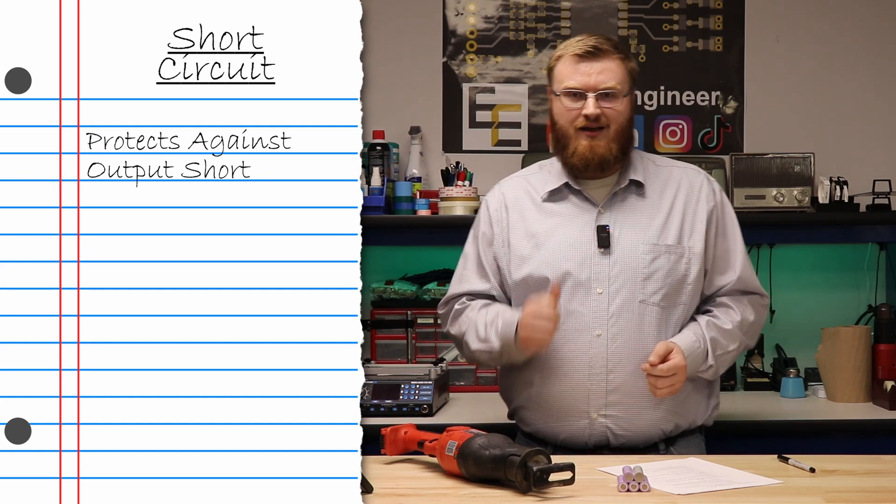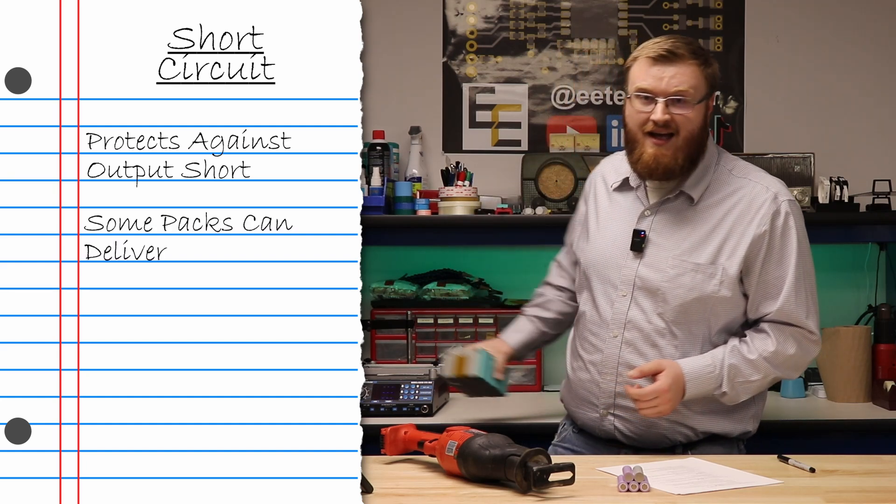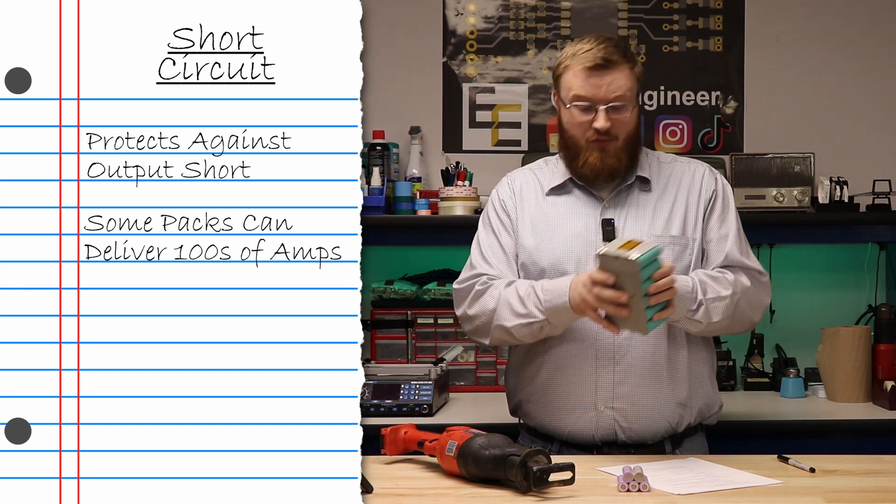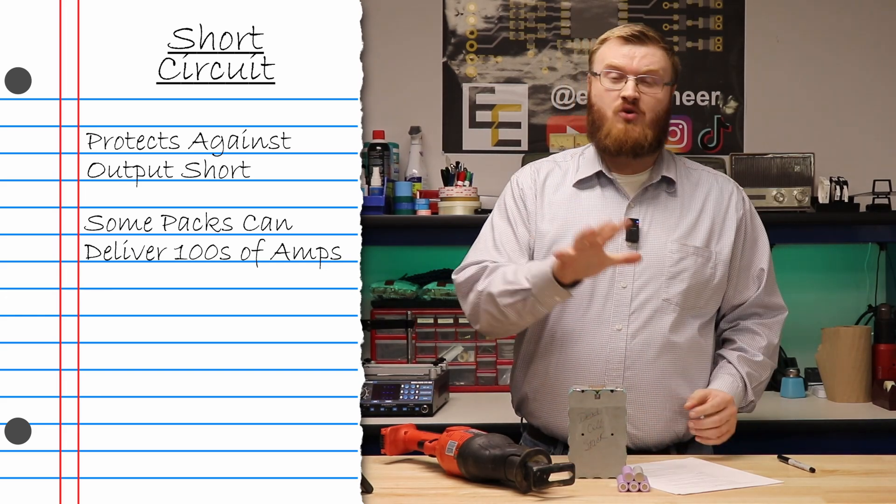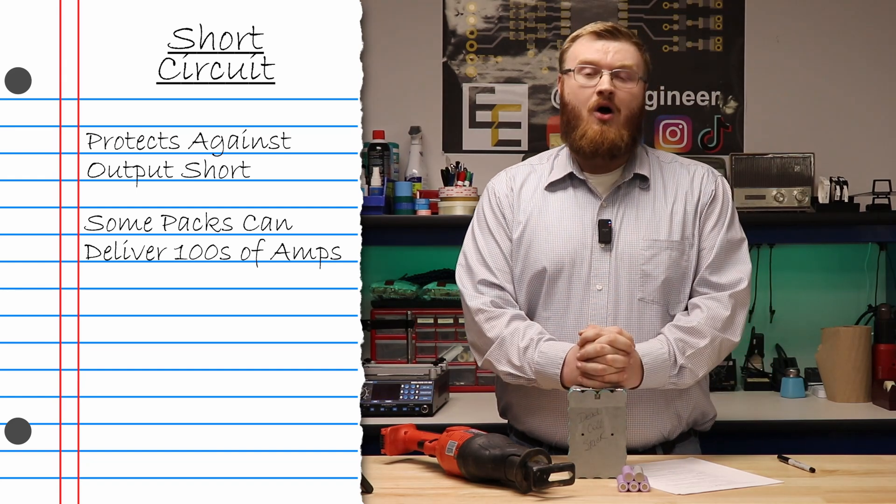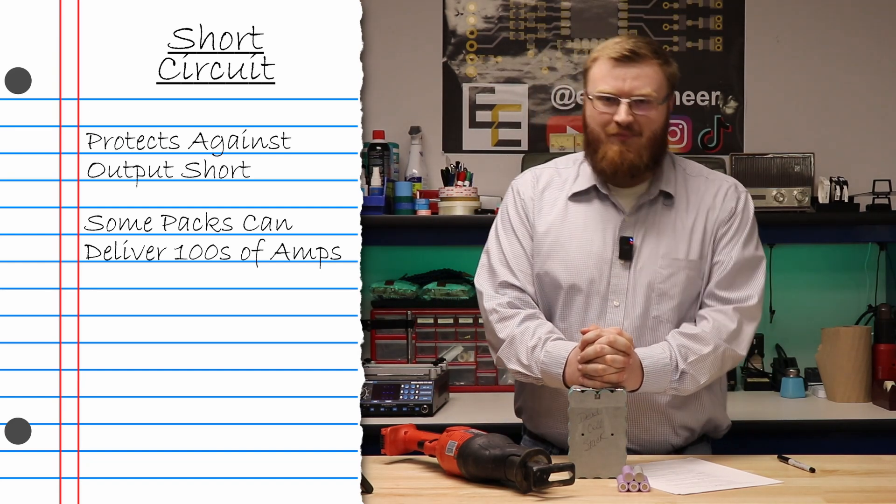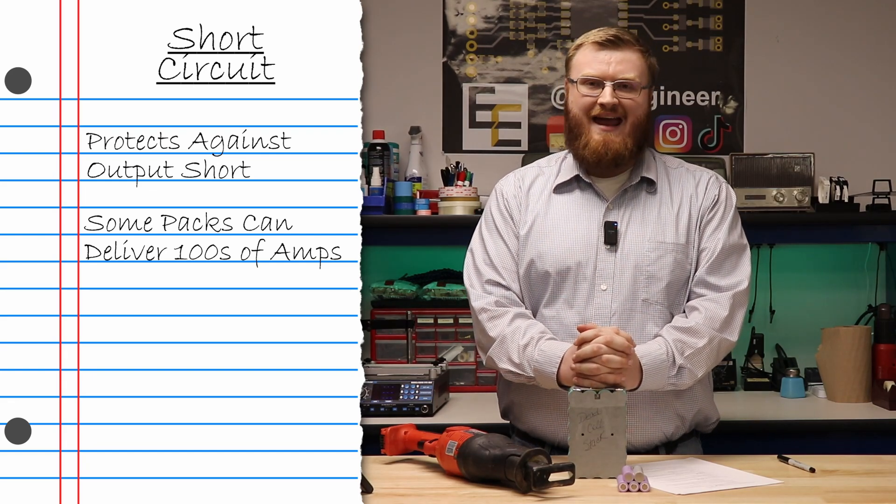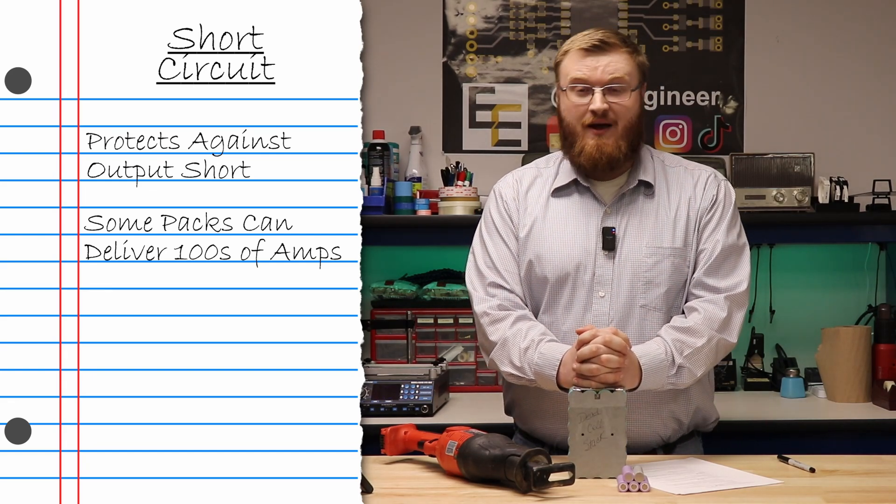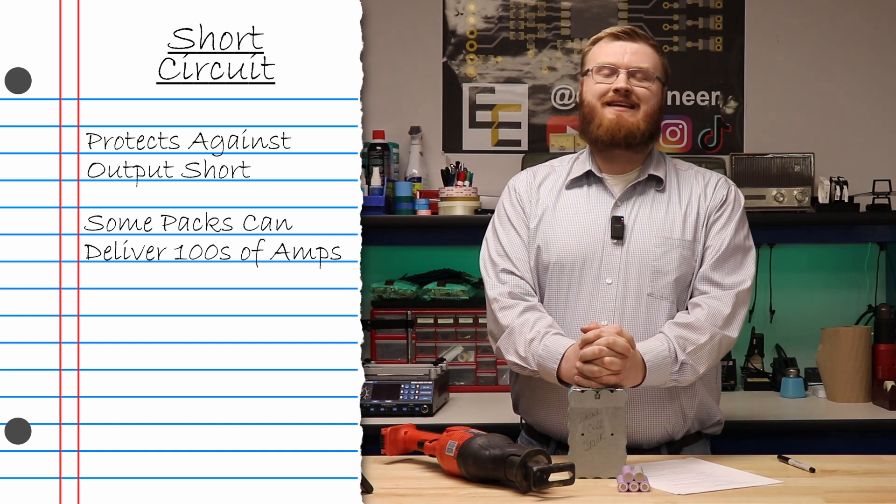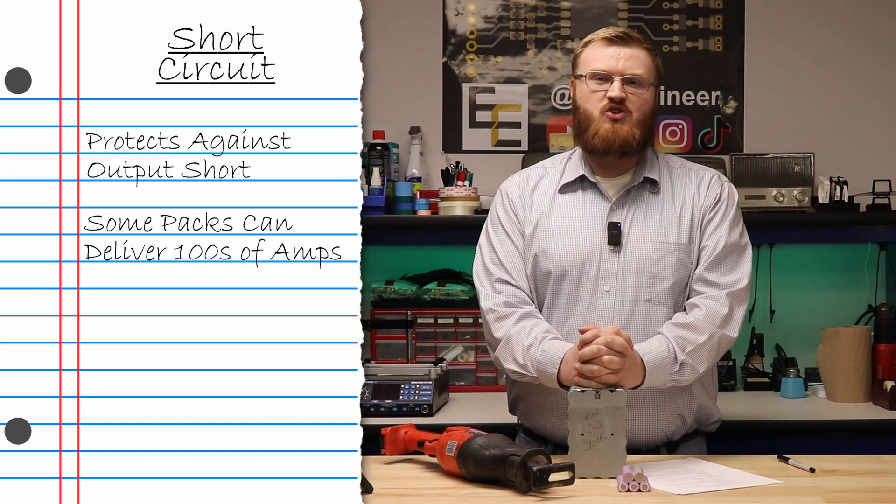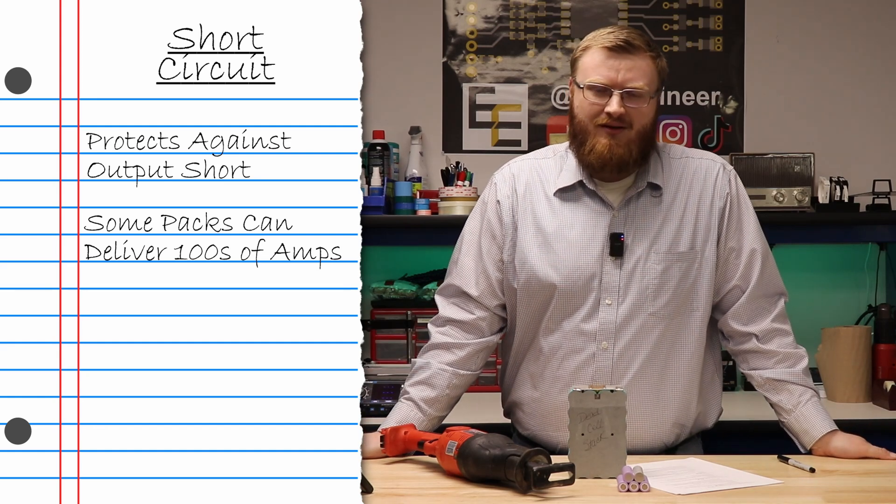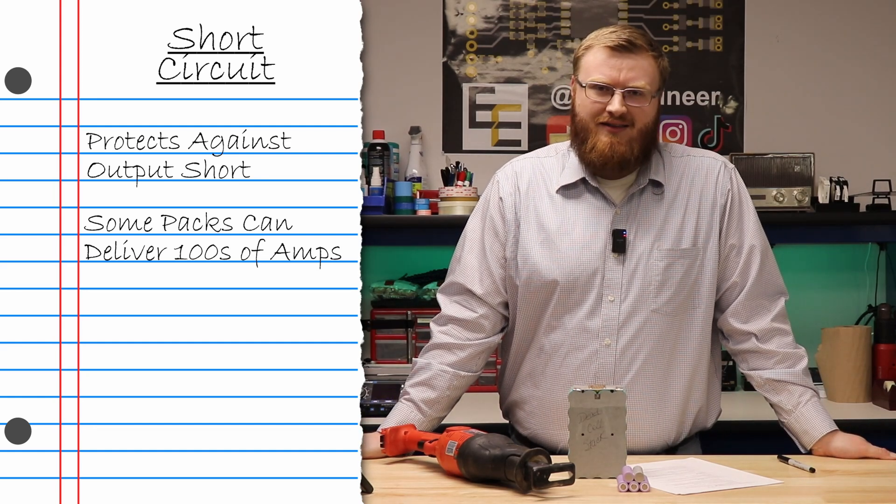To demonstrate this, I'm going to take this four series six parallel lithium iron phosphate pack. I'm going to put some wires on it and short circuit it to show you what a short circuit is capable of. These cells individually are capable of 80 amps apiece. If they're six in parallel, that is 480 DC amps per short circuit. Let me show you exactly what's going to happen when a big battery pack like this short circuits.